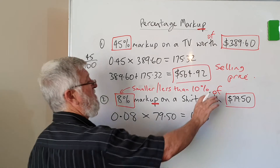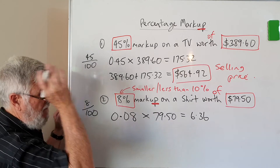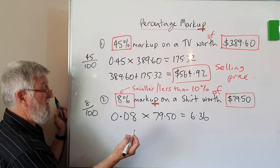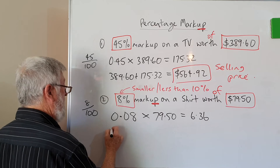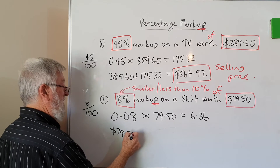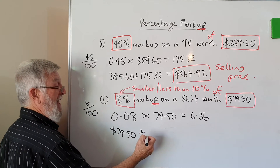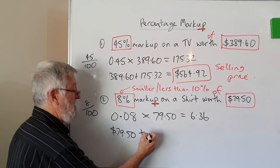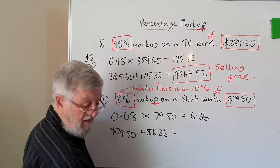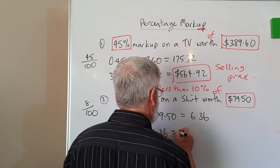When we're talking about a percentage and something, we're normally talking about a multiplication. So then you've got your $79.50, and mark up means it goes up, so we add the $6.36, and we end up getting — I've got it here — $85.86.